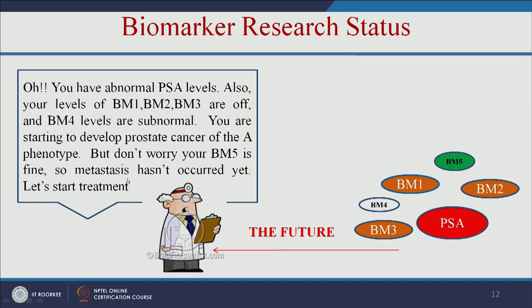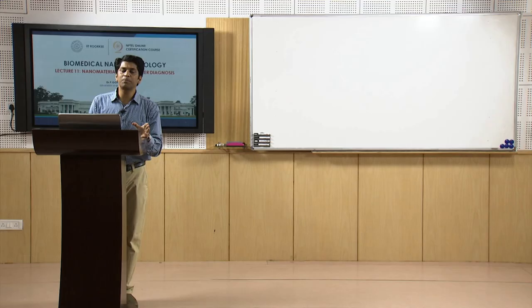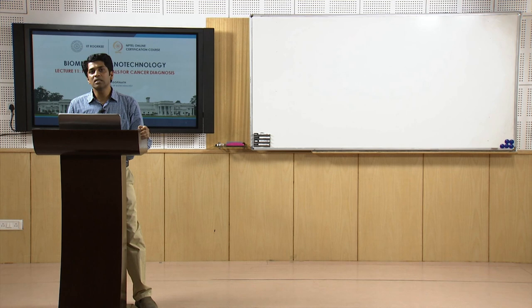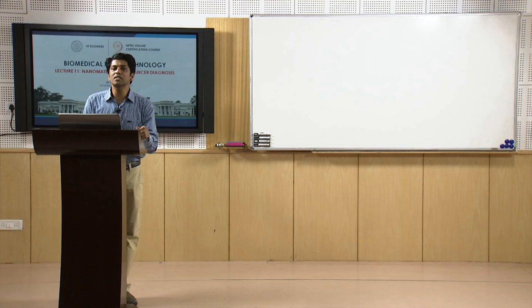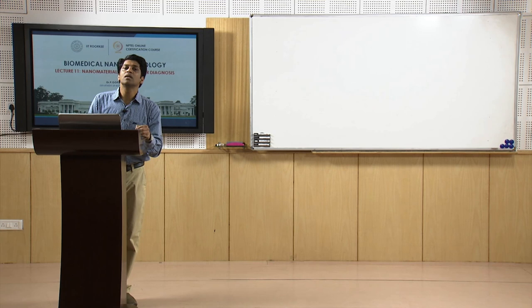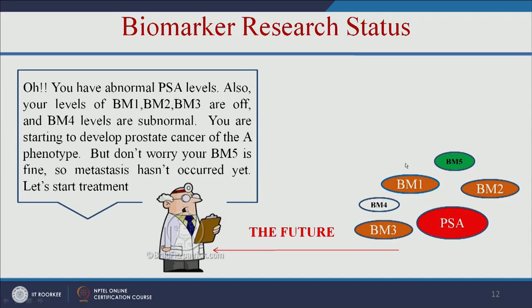Each cancer has several kinds of markers or receptors. We can detect which type of marker is overexpressed or down-regulated and accordingly select the drug, target it, and start the treatment process. This saves time and avoids giving excessive drug concentration to the patient. This is called personalized medicine — instead of giving generalized medicine, we can give the personalized medicine.